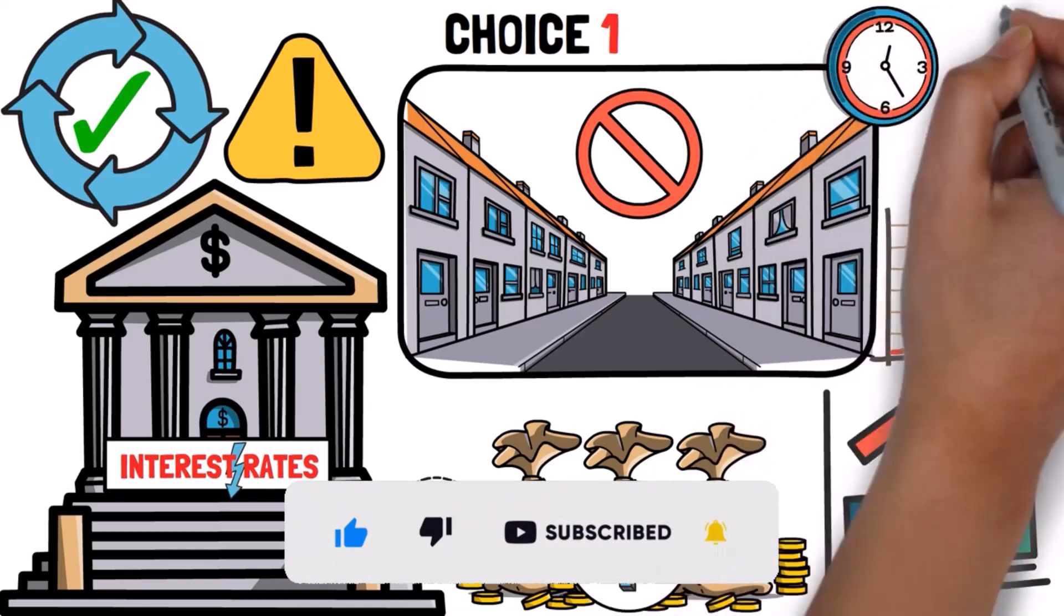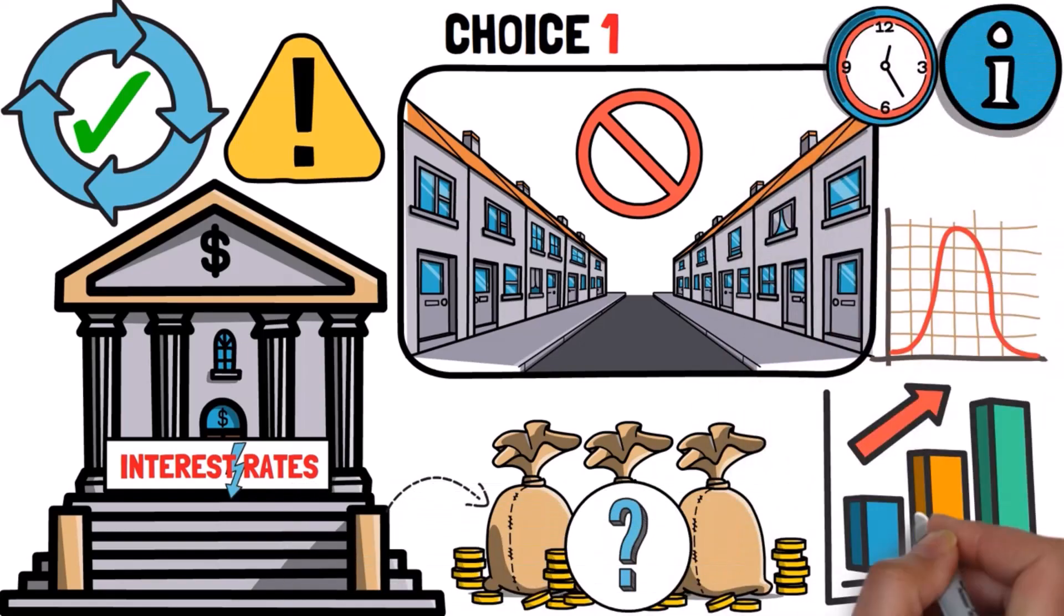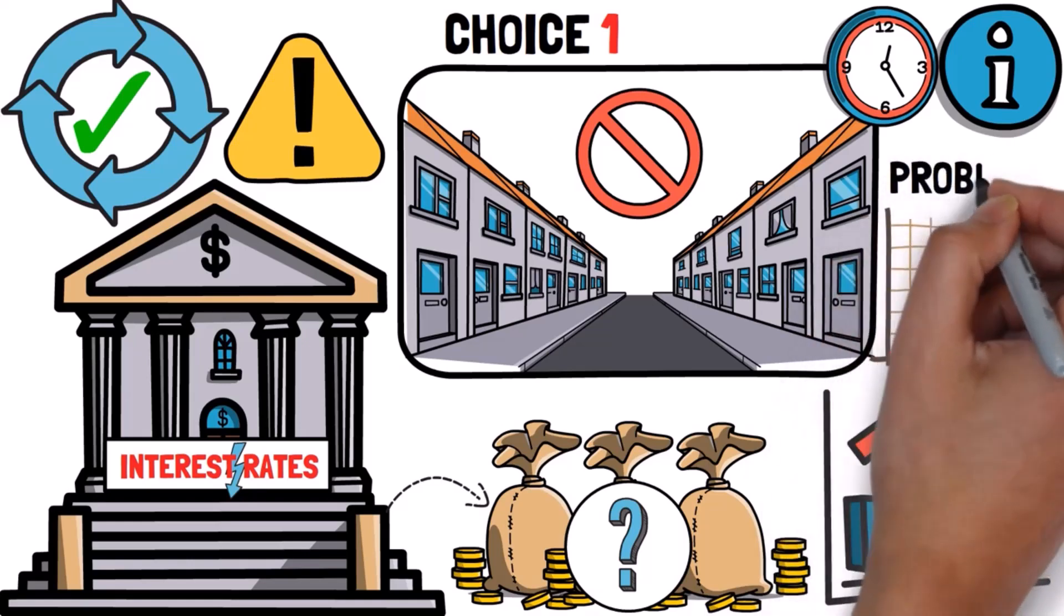During this time, people make strange decisions because of all the extra money in town and some prices become much higher than they should be. This can lead to problems.